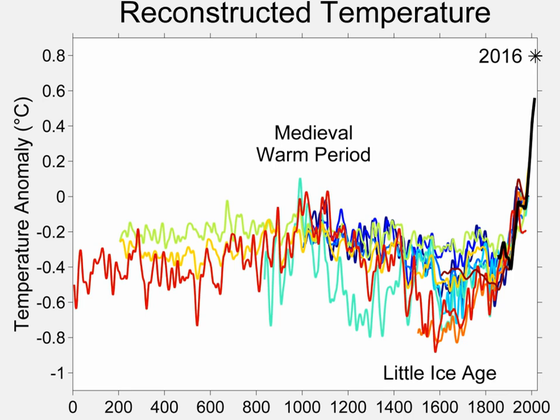Several causes have been proposed: cyclical lows in solar radiation, heightened volcanic activity, changes in the ocean circulation, variations in Earth's orbit and axial tilt, orbital forcing, inherent variability in global climate, and decreases in the human population — for example from the Black Death and the colonization of the Americas.